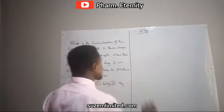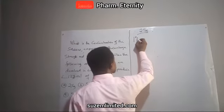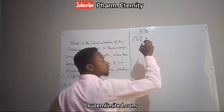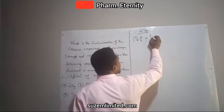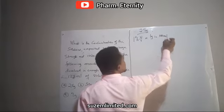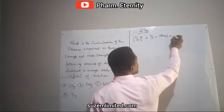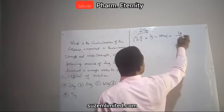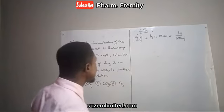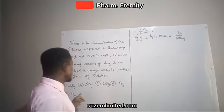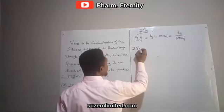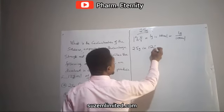There is a relationship that says 1% weight in volume is talking about 1 gram in 100 ml solution, which is equivalent to 1 gram over 100 ml solution. But here we are looking at 25 g in 125 ml.